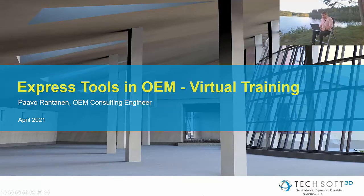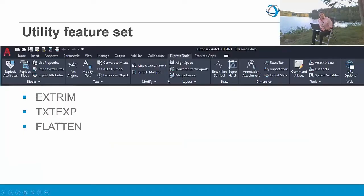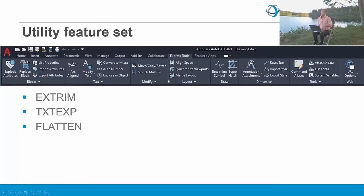AutoCAD Express Tools is a collection of productivity tools that extend the power of AutoCAD. You can access most of the AutoCAD Express Tools from the Express Tools tab in the AutoCAD ribbon. The ones that are not on the ribbon can be started from the command window, with the exception of DumpSHX (dump shape), which needs to be started from the operating system command prompt.